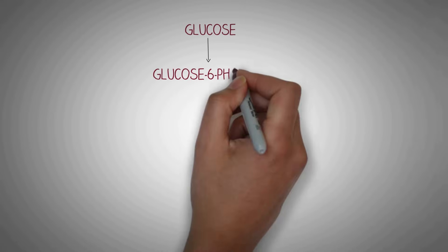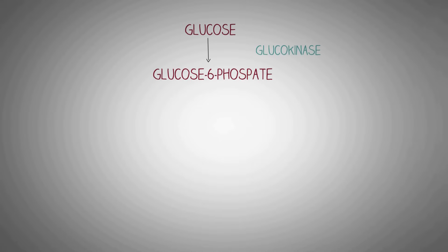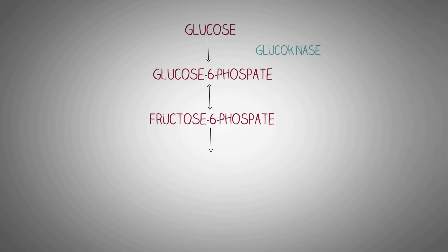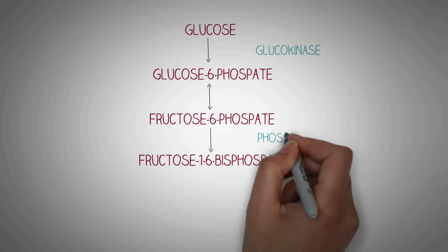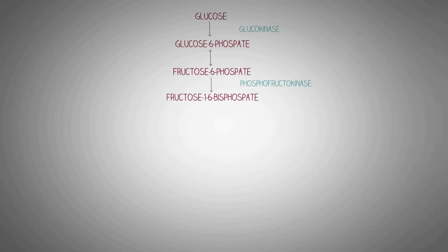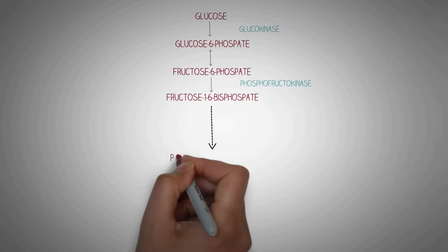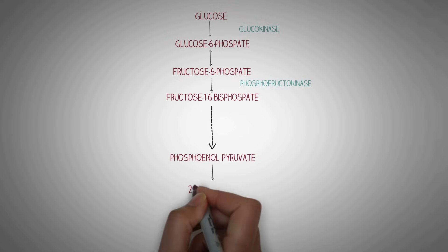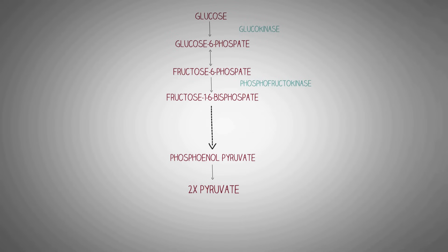Here is an overview of the process of glycolysis. Glucose is converted to glucose-6-phosphate by the enzyme glucokinase. Glucose-6-phosphate is then isomerized to fructose-6-phosphate. Then the enzyme phosphofructokinase adds another phosphate at the first position, converting it into fructose-1,6-bisphosphate. Through a series of reversible reactions, fructose-1,6-bisphosphate is converted to phosphoenol pyruvate (PEP), and through a last irreversible reaction, PEP is converted to pyruvate by pyruvate kinase.